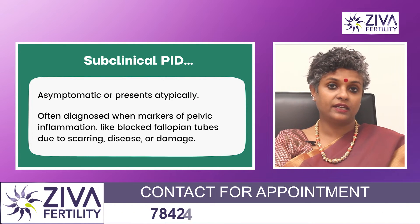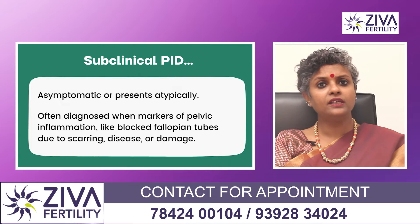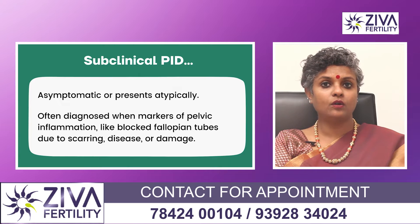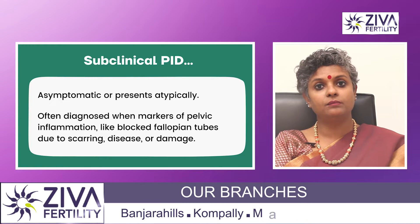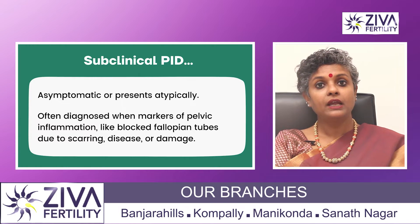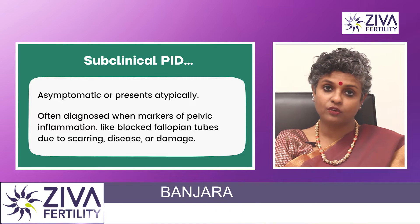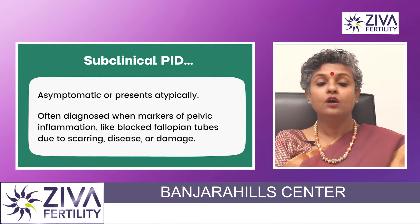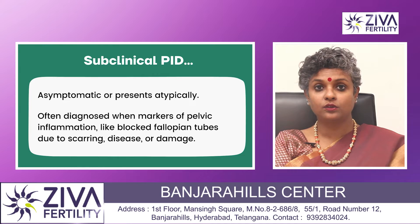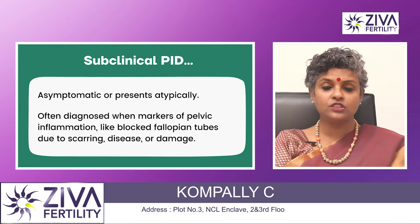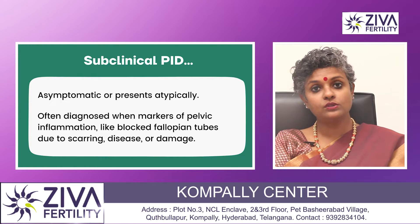Subclinical PID is the second type. When PID is largely asymptomatic or presents atypically, it is called subclinical PID, and it is marked by inflammation of the pelvis or blocked fallopian tubes due to scarring or damage to these tubes.